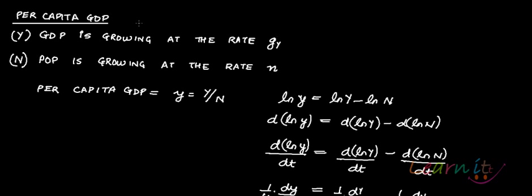In this recording we'll talk about the application of logarithmic functions for finding per capita GDP. Suppose Y is GDP and population is given by N, and GDP is growing at the rate GY and population is growing at the rate small n.